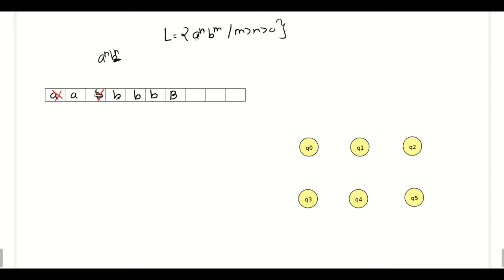Then we will come back to the left side and replace the next a with x, and again go towards the right side and replace a b with y. So now we have marked an equal number of a's and b's. Now if the tape still has extra b's before reaching the blank symbol, we can say that the number of b's in the string is greater than the number of a's.